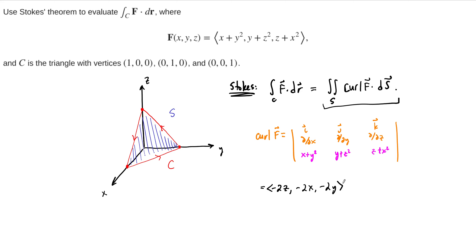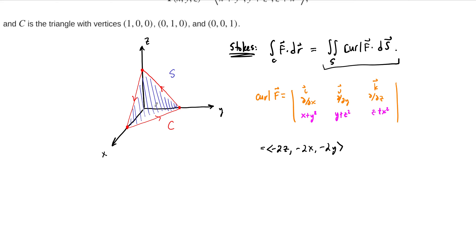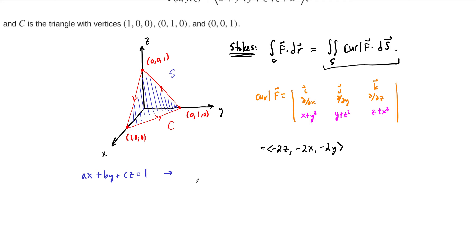Now we need to think about how we're going to represent this surface. This surface is the graph of a function. It goes through the points (1,0,0), (0,1,0), and (0,0,1). Any plane is written as AX plus BY plus CZ equals some constant D. Setting D equal to 1 and checking each vertex by inspection, the equation of this plane is X plus Y plus Z equals 1. When X is 1 and everything else is 0, it's satisfied — this is the right plane.